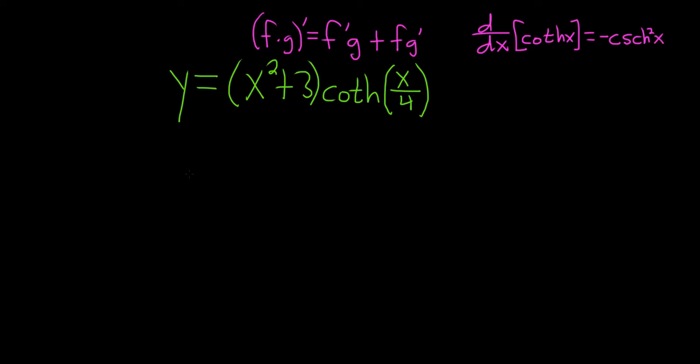Before we do this, I want to do one more thing. I want to rewrite this as follows. Because we do have to use the chain rule, let's go ahead and write this as hyperbolic cotangent of one-fourth times x.